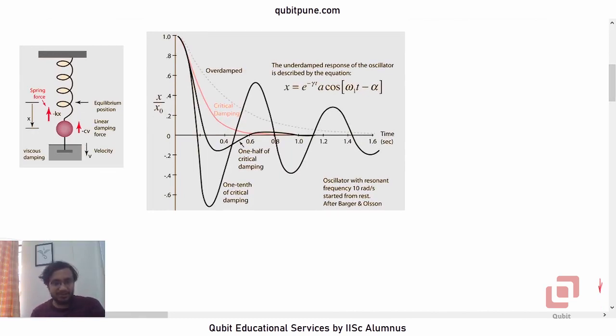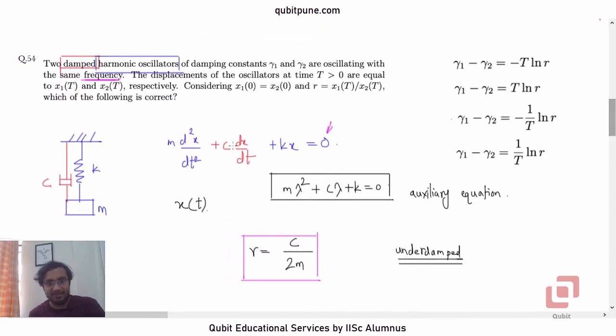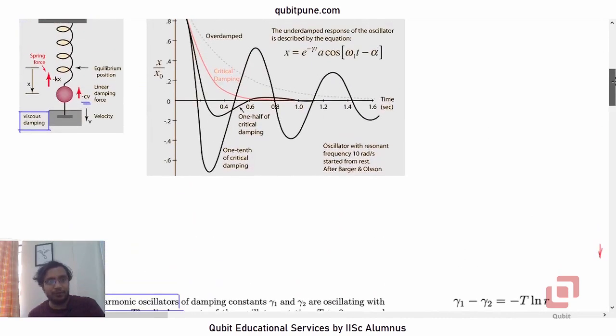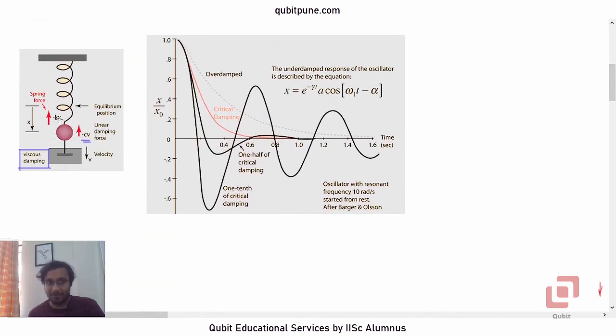So this is the image that I have borrowed from hyperphysics. This is the system which I am talking about. This is the mass, oscillating mass, this is the viscous damping. So the friction force is there. And as you can see here, this force that they have shown, linear damping force, it is proportional to velocity, and that is exactly what we have written here: c dx/dt. And of course, you know, the restoring force that is the spring force kx.